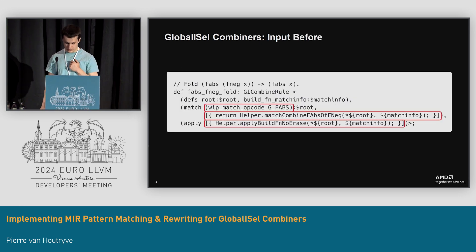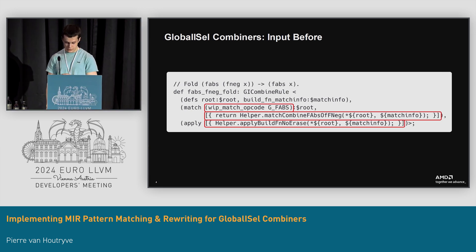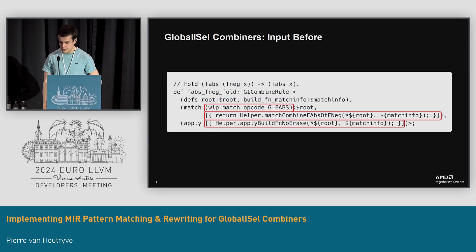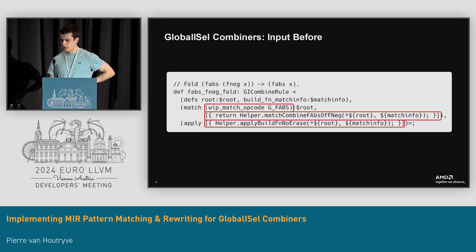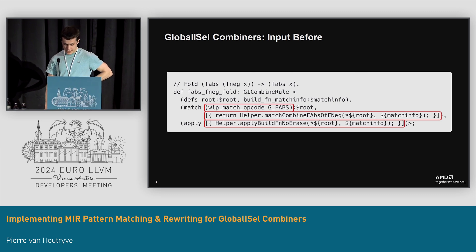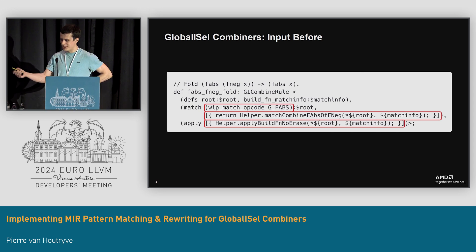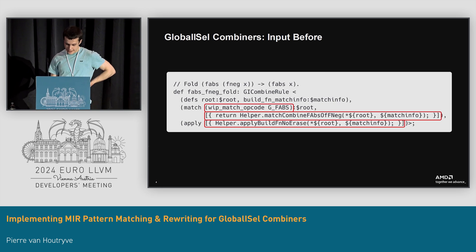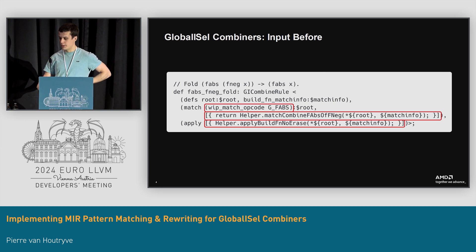We use TableGen to declare combine rules and emit all the repetitive matching and rewriting code for us. This is what a combine rule would look like before in TableGen. Note that we only match the root opcode — the match opcode fhabs at the top — and then everything else is C++. You have the match logic in C++ and the apply logic that's also in C++.